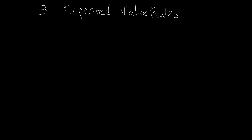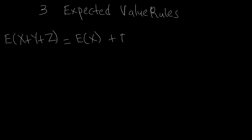The first rule says that the expected value of the sum of several random variables is equal to the sum of their expected values. Here we have three random variables X, Y, and Z.